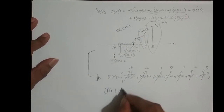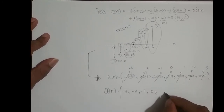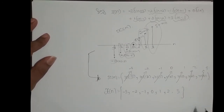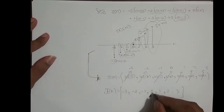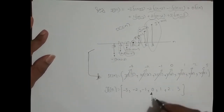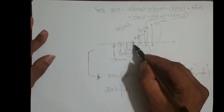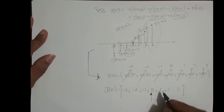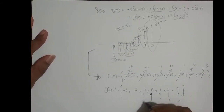So I can write x of n as the sequence: minus 3, minus 2, minus 1, 0, 1, 2, 3. And we put an arrow mark to indicate that at n equal to 0, what is the amplitude. Whenever I put an arrow mark, that is the sample at n equal to 0. In this case at n equal to 0 there is no sample, it is 0, so I have placed the arrow mark at 0. To the right of the arrow: n equal to 1 is 1, n equal to 2 is 2, n equal to 3 is 3. To the left: n equal to minus 1 is minus 1, n equal to minus 2 is minus 2, n equal to minus 3 is minus 3.